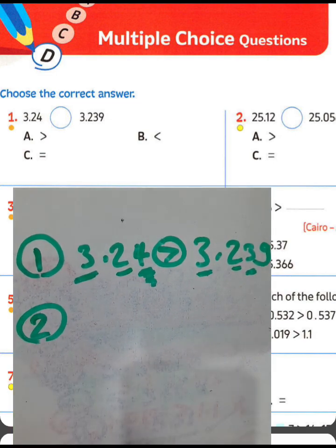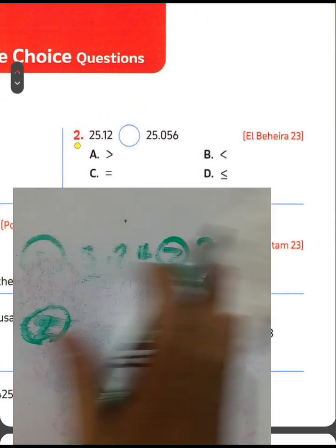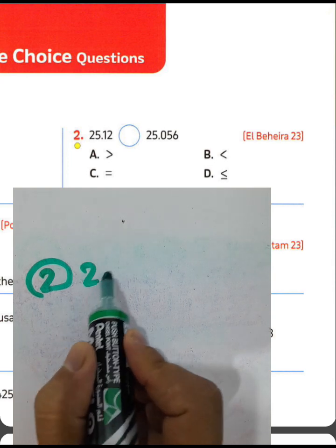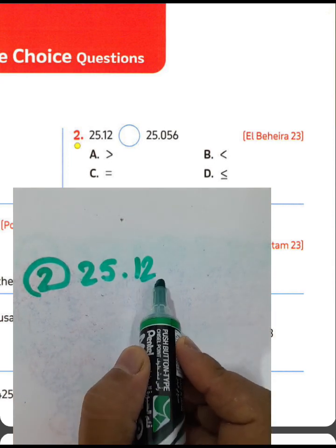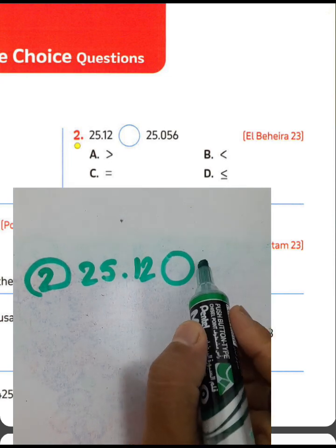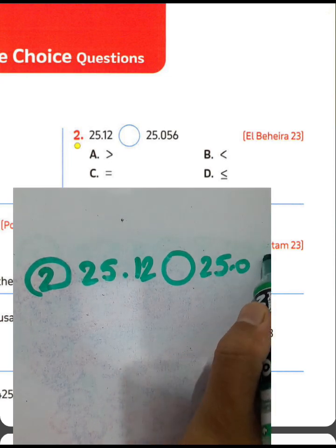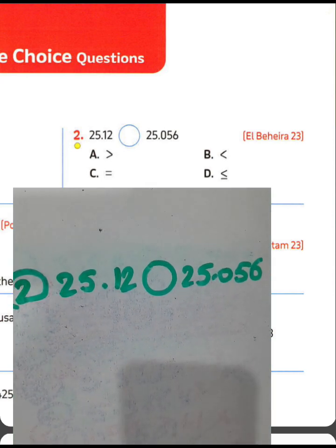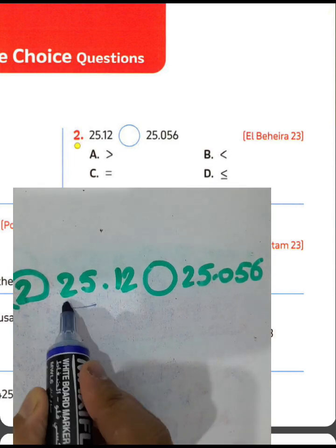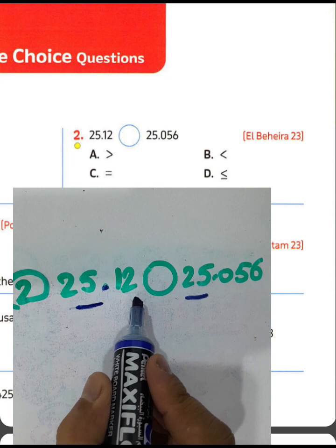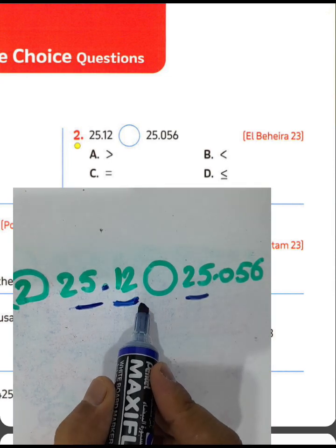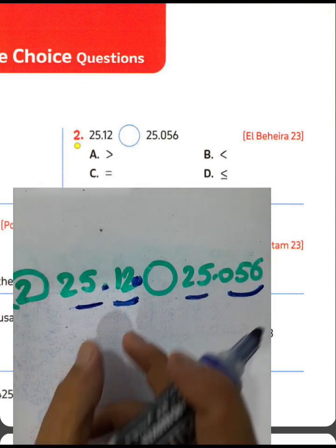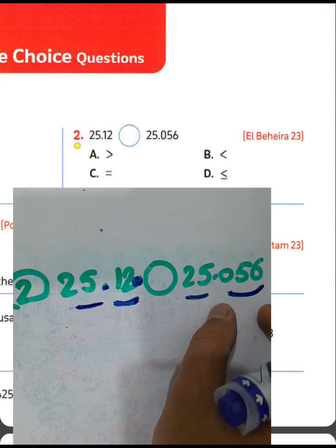Question number two: 25 and 12/100 or 25 and 56/1000 — which is greater? Look at the left-hand side: we have 25 and 25, those are equal. But the decimal parts differ — 12/100 versus 56/1000. We must put a zero here to make equal parts: 120/1000 is greater than 56/1000.